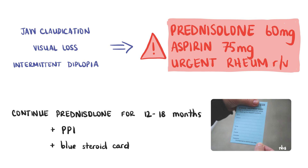Once signs and symptoms resolve and inflammatory markers come down, you can start to reduce the dose of prednisolone to zero over about 12 to 18 months. The patient should be provided with a blue steroid card while on prednisolone. Consider gastro protection with a PPI and bone protection as well. Provide oral and written information on giant cell arteritis and signpost to local support groups like PMRGCA UK.